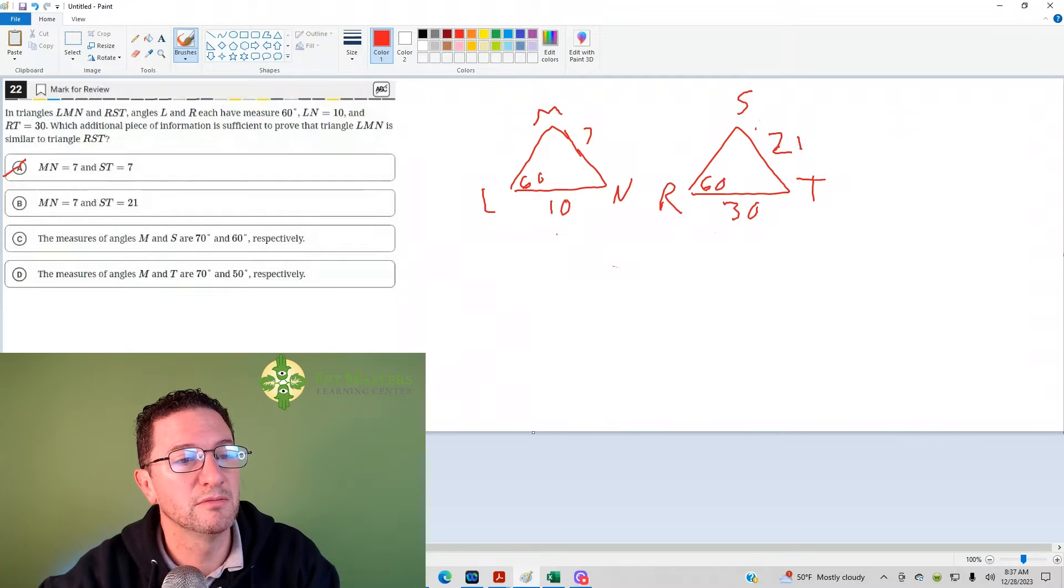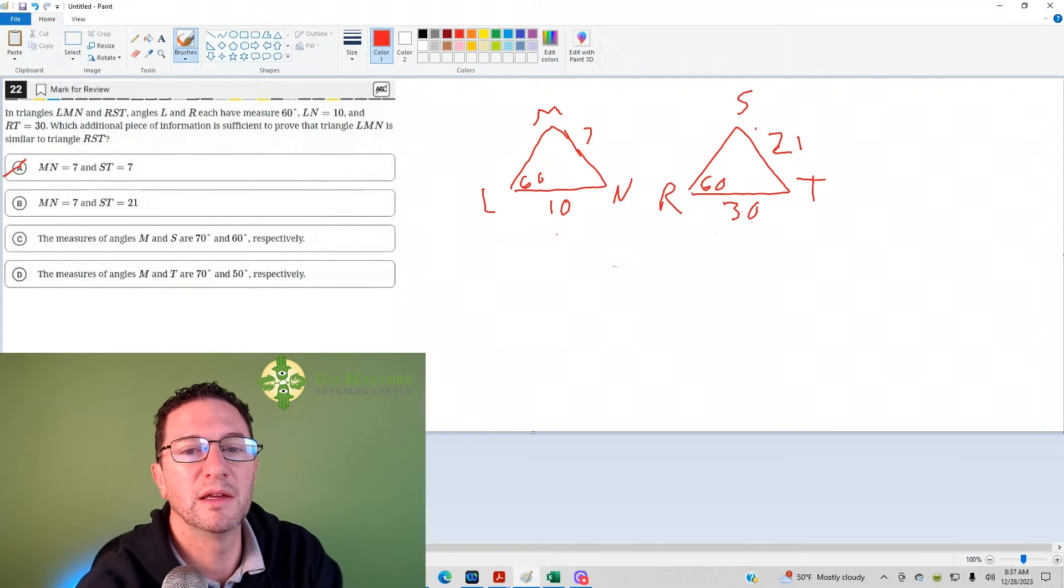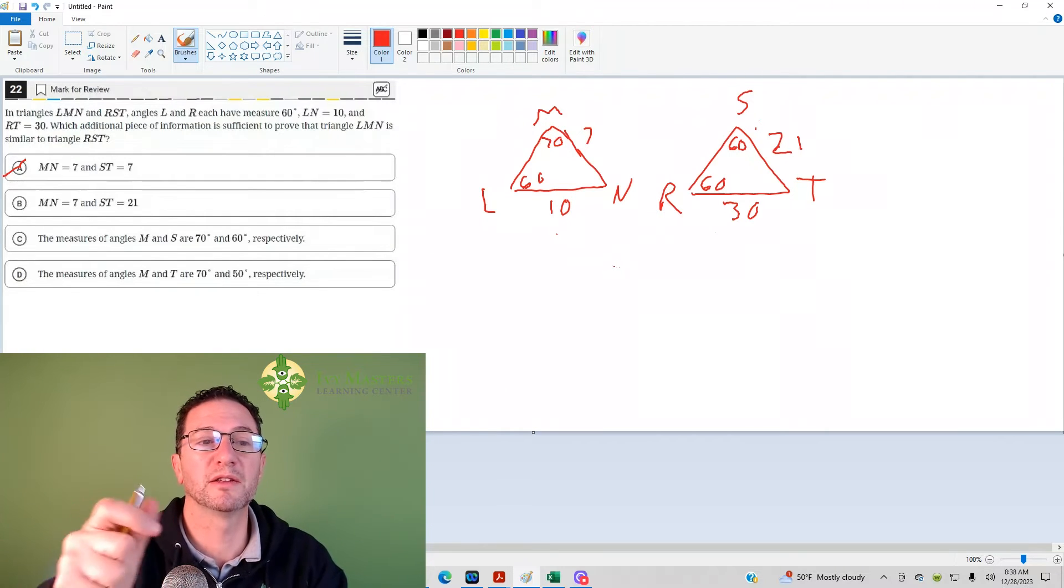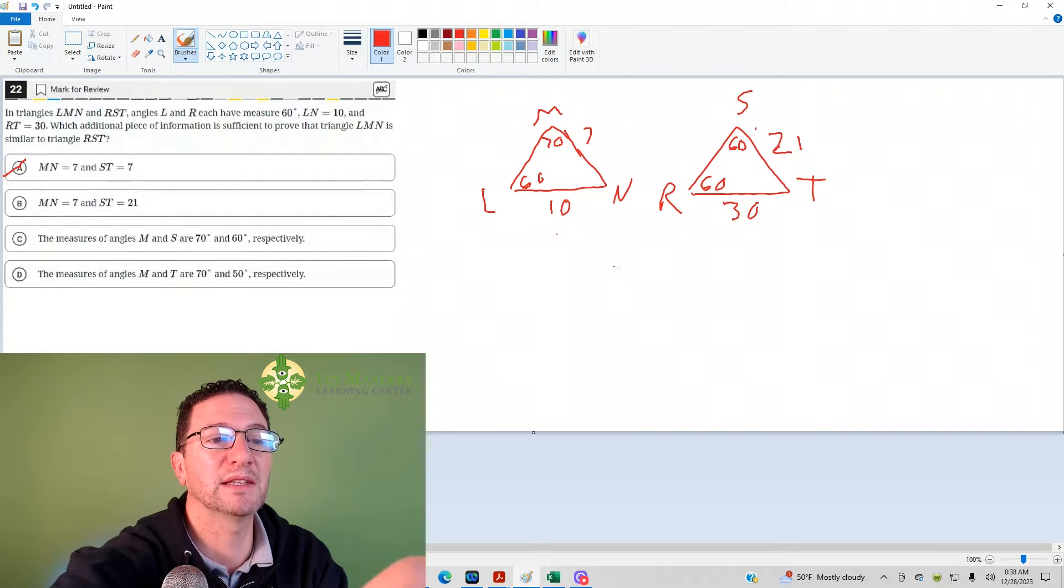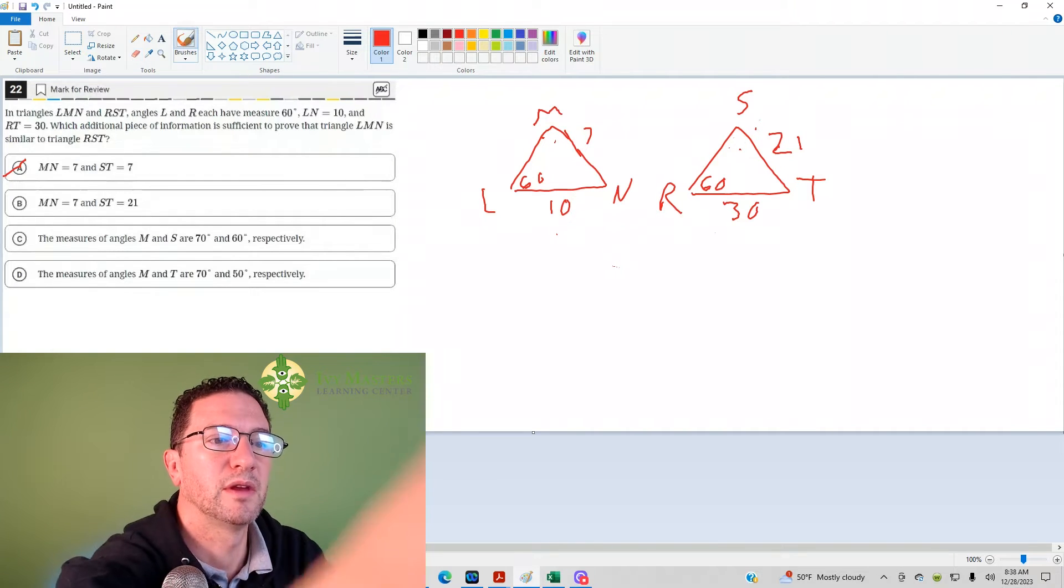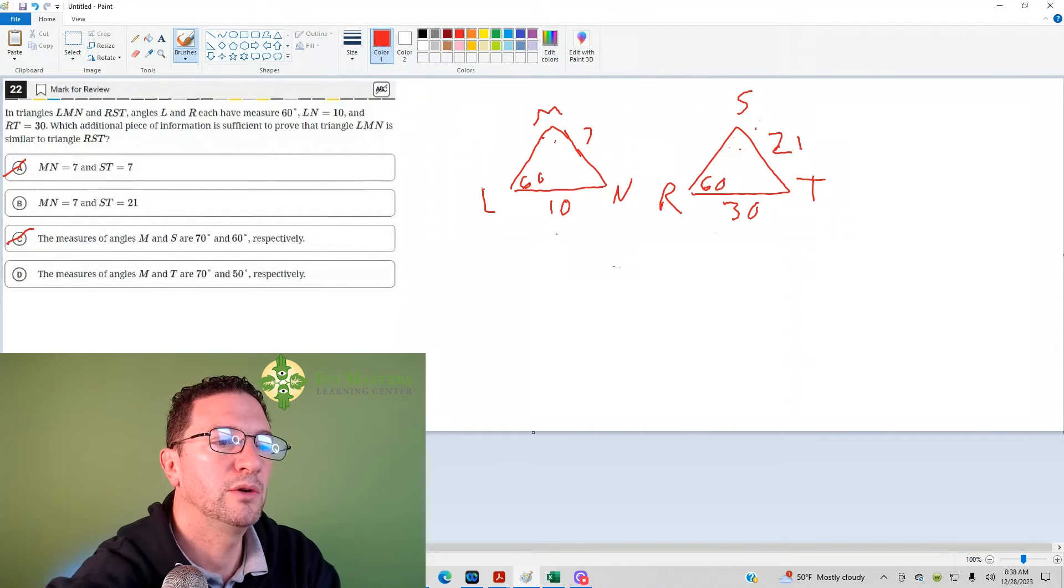Answer choice C: The measures of M and S are 70 and 60 degrees, respectively. So if we made the 70 and the 60, that would definitely spoil the similarity. Because they'd either have to be 70-70 or 60-60, in which case they would be similar. But they are corresponding angles that are different angle measures. Corresponding angles have to have the same exact angle measure. So you are gone, answer choice C.